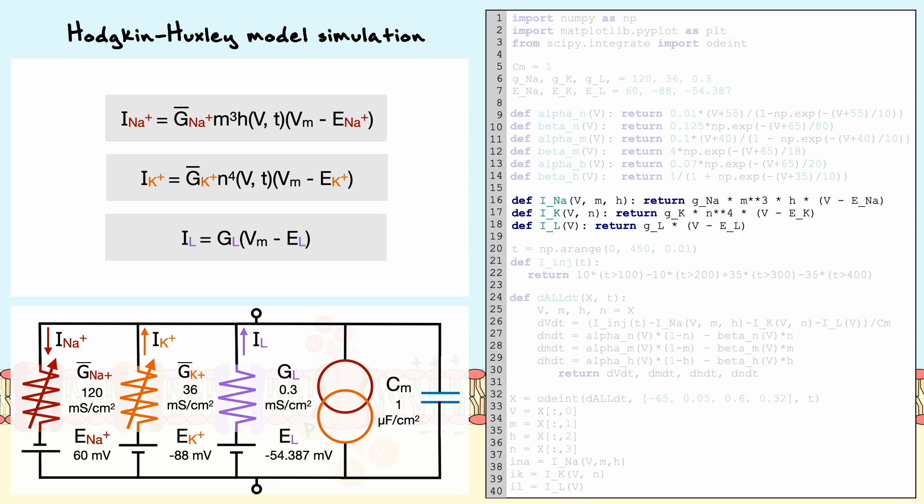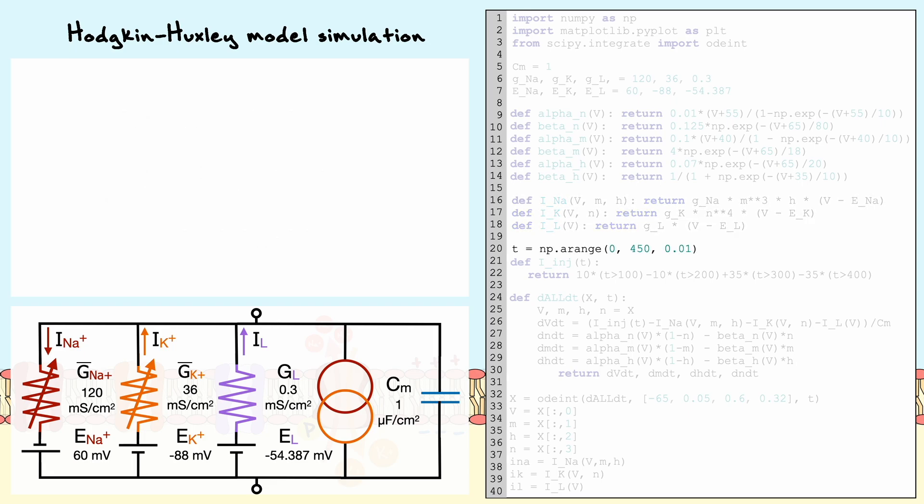Then, to get an expression for the injected current, we must first establish the range of time for which our experiment will last. In this code, we will consider an interval of 450 milliseconds that we will divide in increments of 1 hundredths. Since we will integrate later, it is good to use a small incremental step.